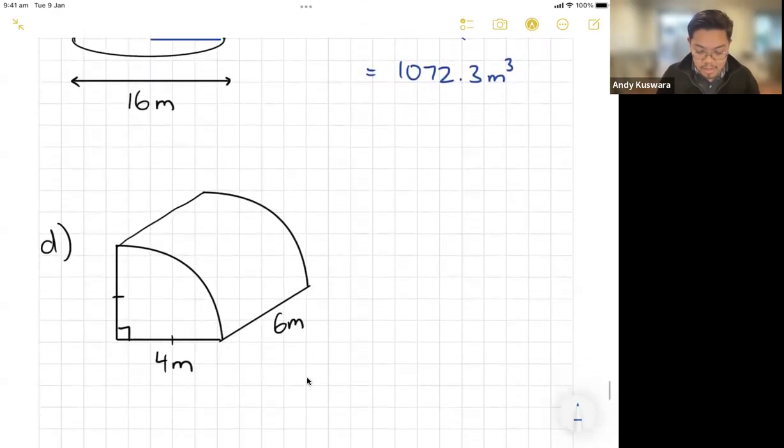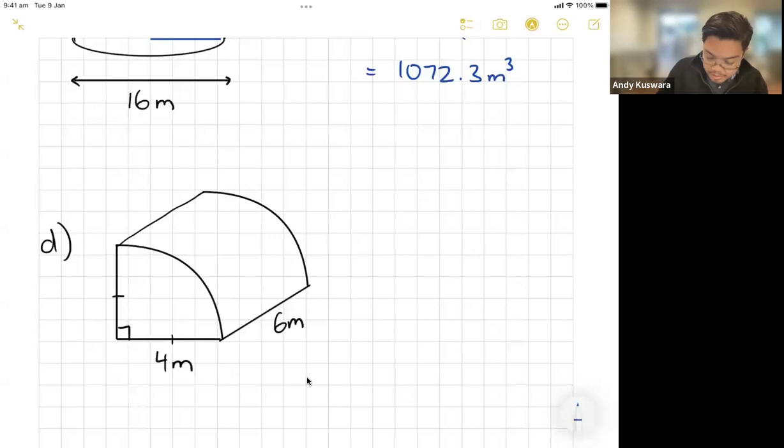We have one last one. This is going to be volume, and this one here is technically a prism, so I'm working with V equals Ah. So the area here is a quarter of a circle, so quarter times pi times radius squared.